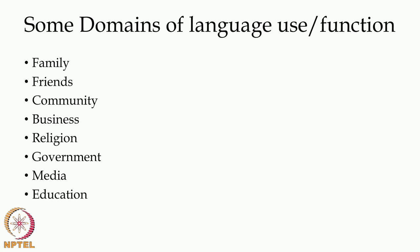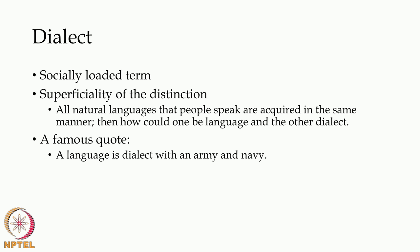There is a lot to discuss about language, and we do not mean to underestimate this discussion. Let me take you step by step to understand dialect. Some of the domains in which people use language are families, friends, community, business, religion, government, media, and education, to name a few. When we interact in these domains, we use different kinds of language, and this will become relevant in our discussion pretty soon. Dialect happens to be a socially loaded term — that is, if we define dialect on the basis of a particular region or specific structural variation, that leads to superficiality of the distinction.